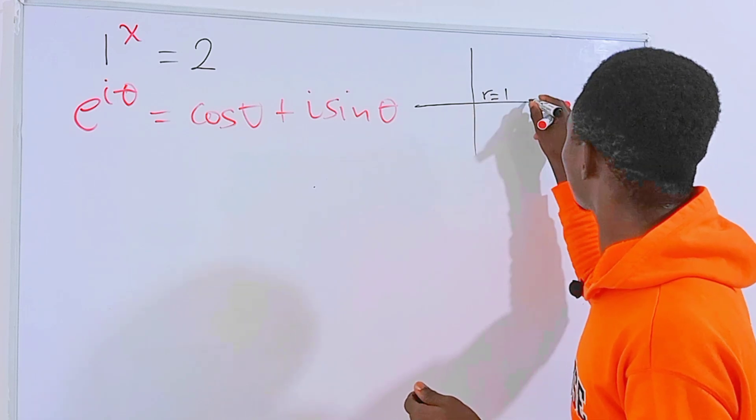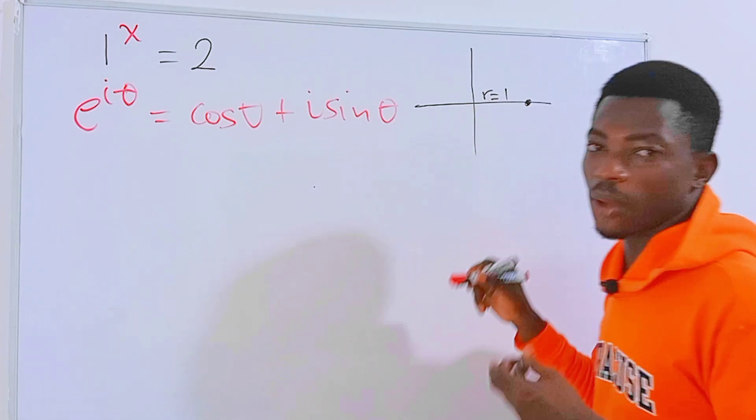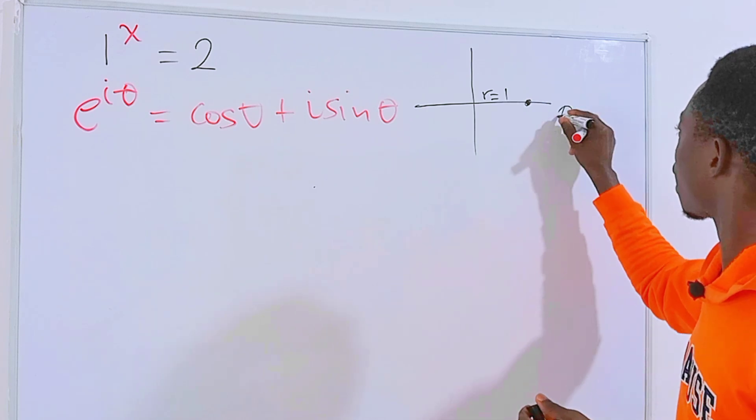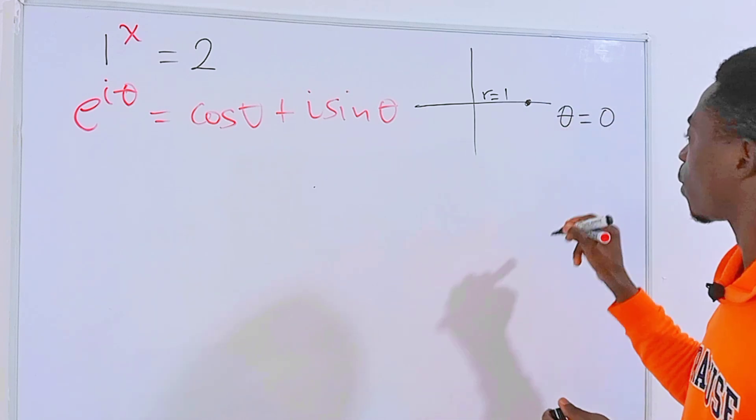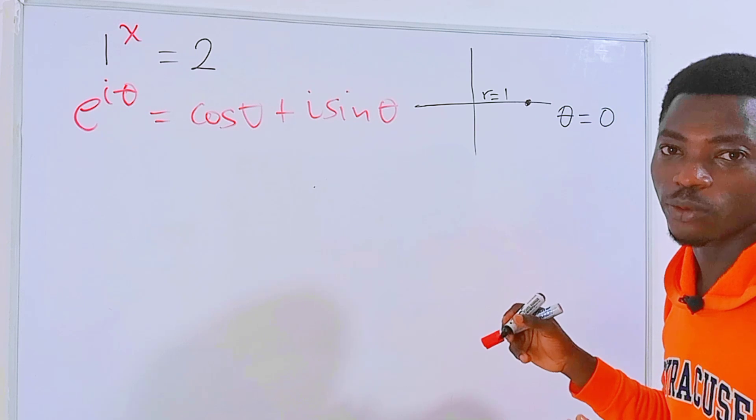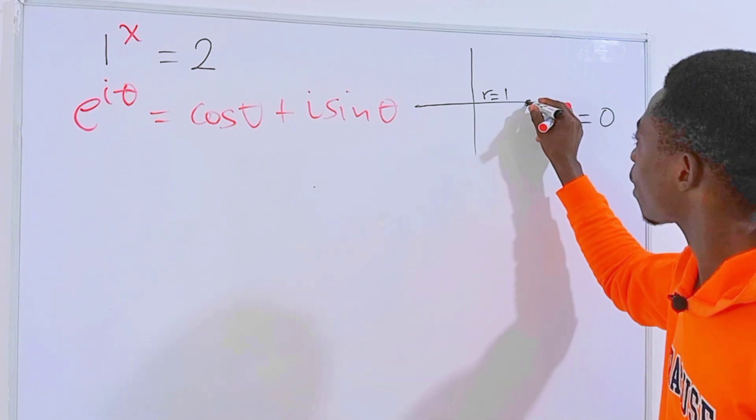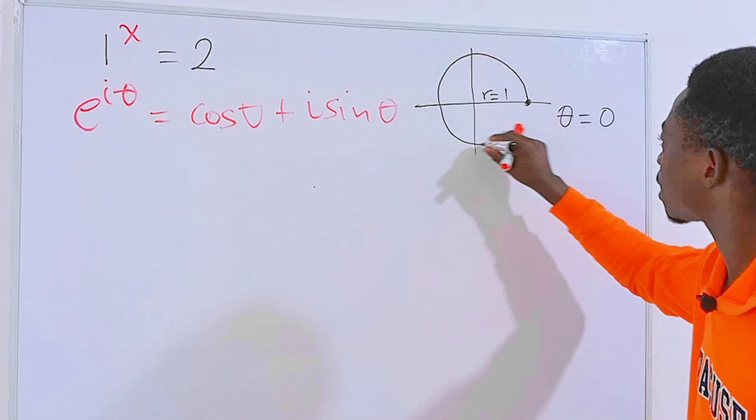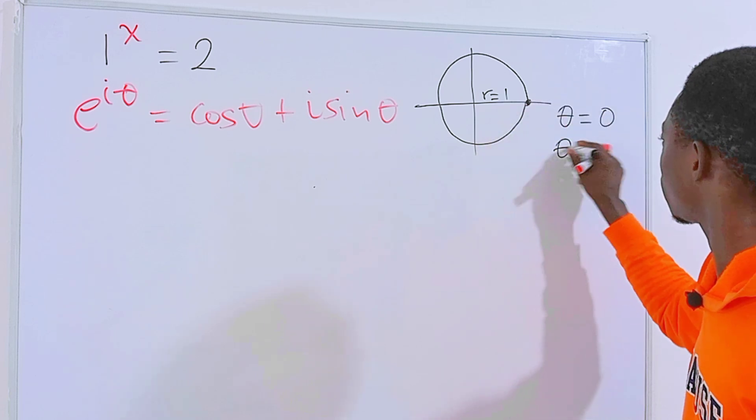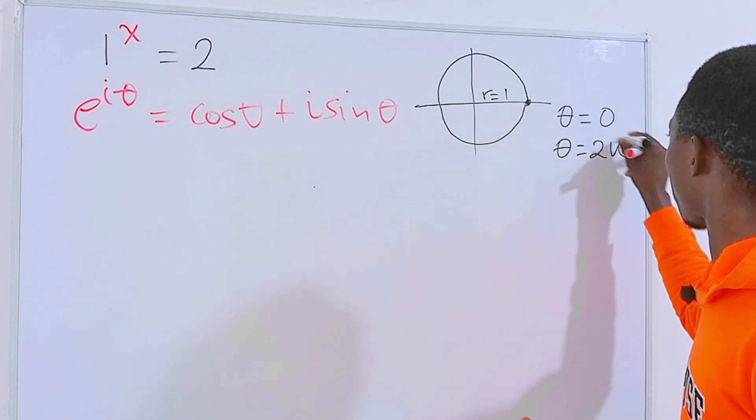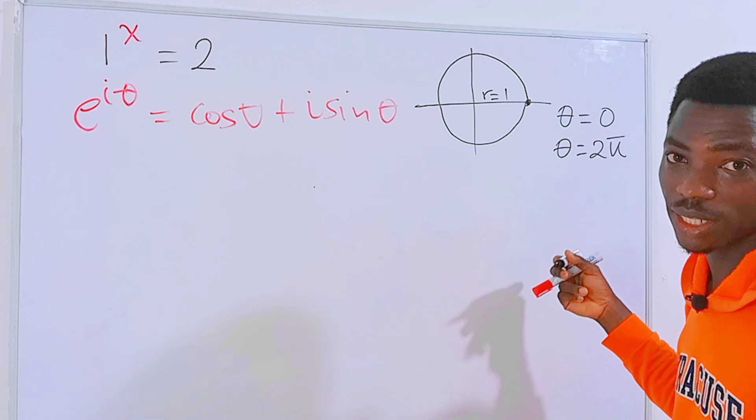Then for a unit circle, we have a radius of 1 which will be somewhere here. Now at this point, theta equals 0. And 0 is not the only angle for theta. In fact, we can stand here and rotate it once, and theta will be 2π, which is also 360 degrees.